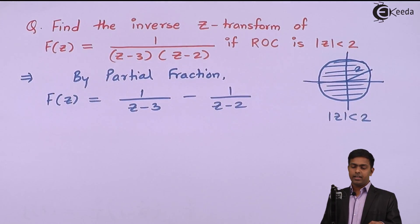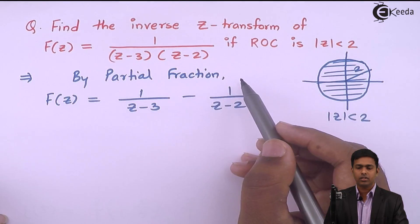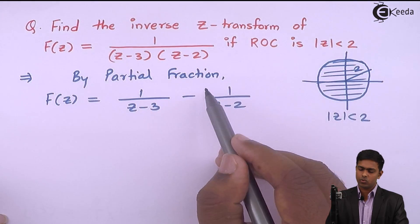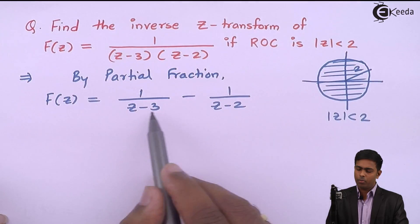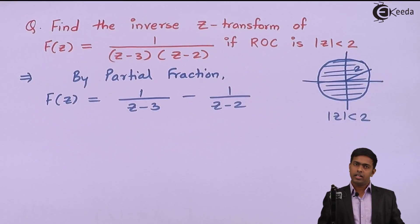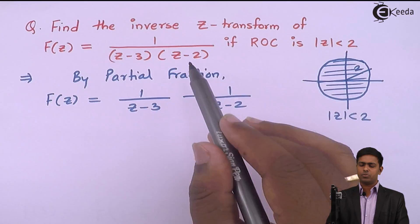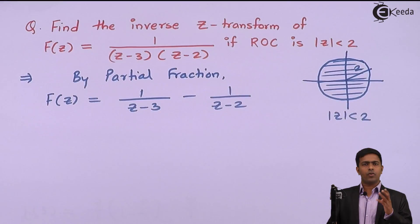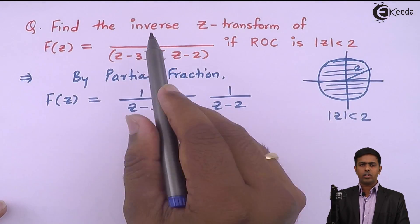We can verify this directly by cross multiplication: the numerator becomes (z-2) − (z+3), so z and z cancel giving 3 − 2 = 1, and the denominator is (z-3)(z-2). If you prefer, you can perform the partial fraction using A/(z-3) + B/(z-2) and solve for A and B to get the same result. So we have separated the functions.